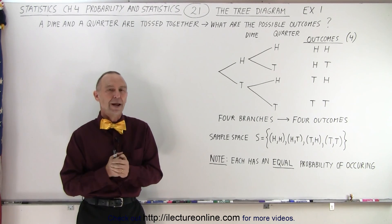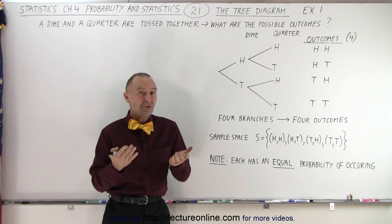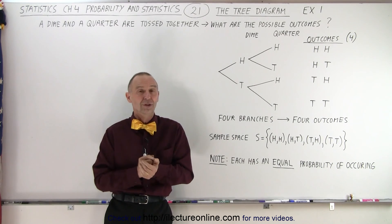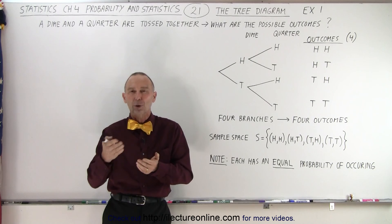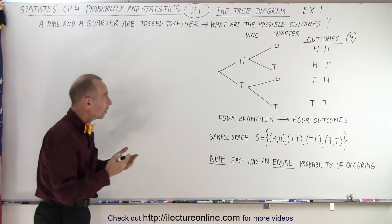It's called the tree diagram. And in this case, we're going to represent the tossing of two coins, both a dime and a quarter. So what does that look like?